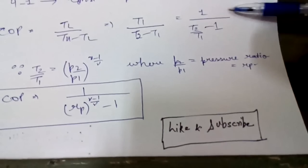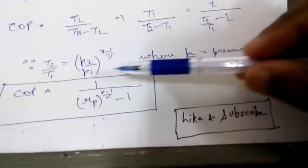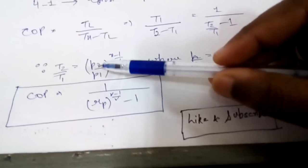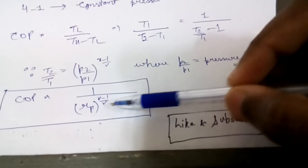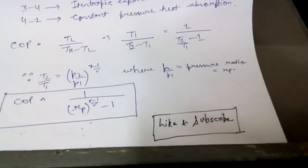And COP then can be written as 1 upon T2 by T1 minus 1, that is T2 by T1 is replaced by P2 by P1 to the power gamma minus 1 by gamma which in turn P2 by P1 is Rp. So 1 upon Rp to the power gamma minus 1 upon gamma minus 1. So this is the COP of the system.